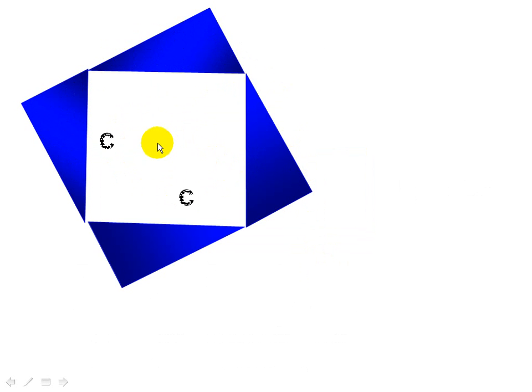So let's find the area of the large square. First, we note that this inner square has a side of C, and the outer square has a side of A plus B.